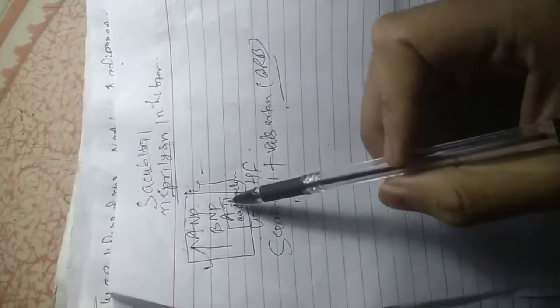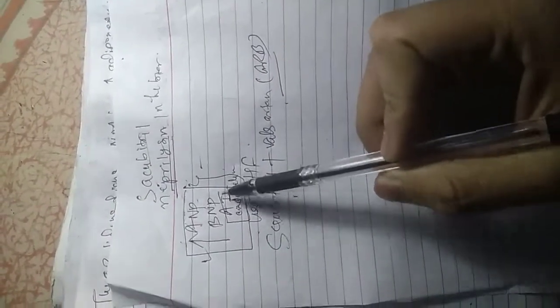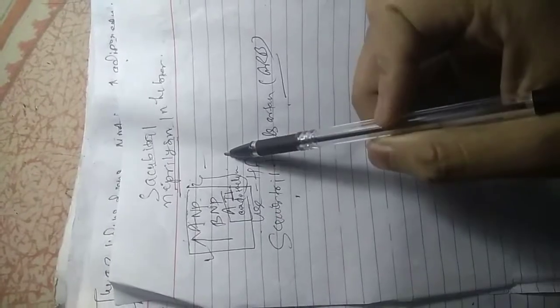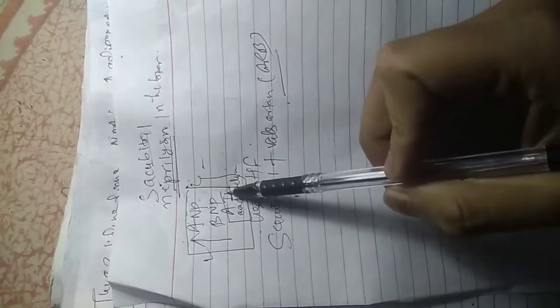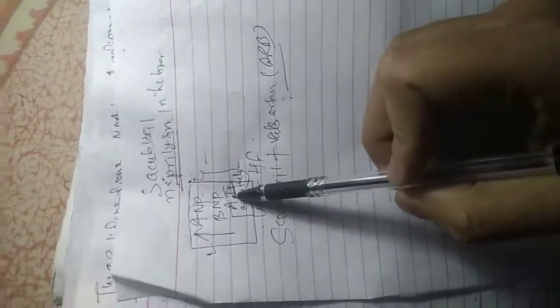When we inhibit neprilysin, then angiotensin level rises in the blood and vasoconstricting effect is seen. So when we block the angiotensin receptor, then its effect is not seen and there is vasodilation, natriuresis.